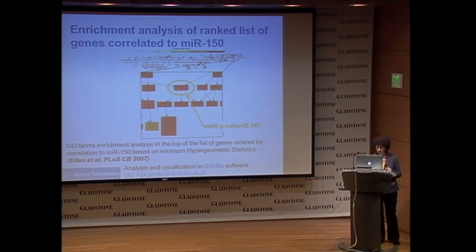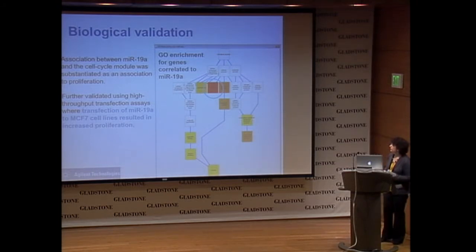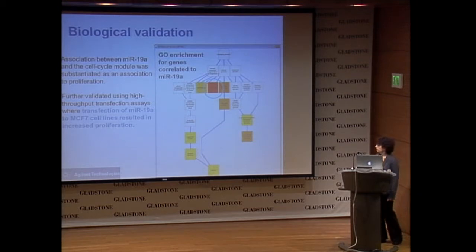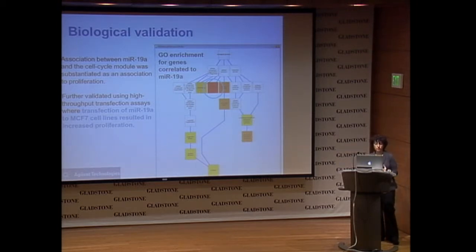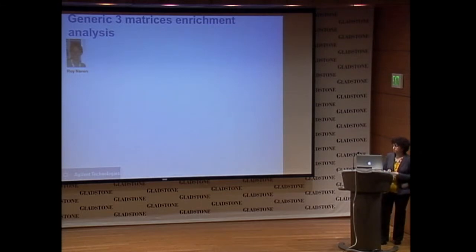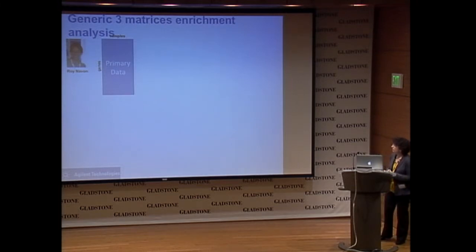At the time they were working on the paper, they did some biological validation — for example, for MIR-19A, they showed it really affected proliferation using high-throughput transfection assays, and showed that transfection of MIR-19A into MCF7 breast cancer cell lines resulted in increased proliferation. This validated that the analysis is useful and important. But basically only one graduate student could do this analysis and get to meaningful results, so we were thinking how to generalize it and give it to other people who could approach this problem more globally.